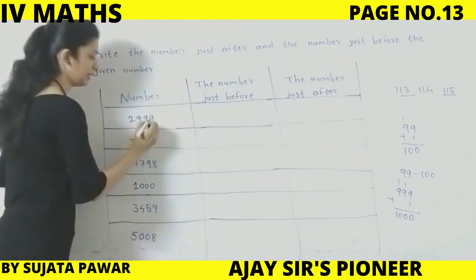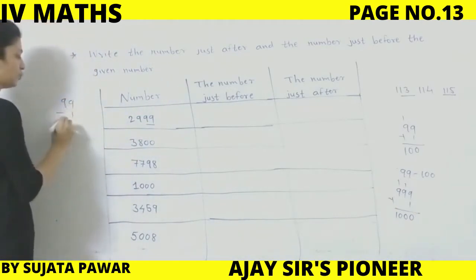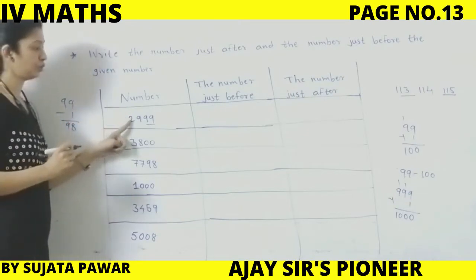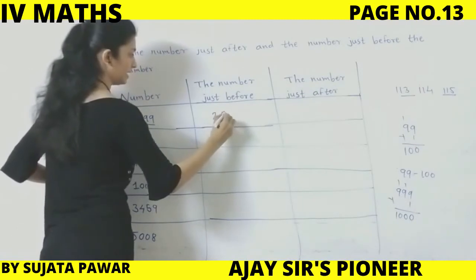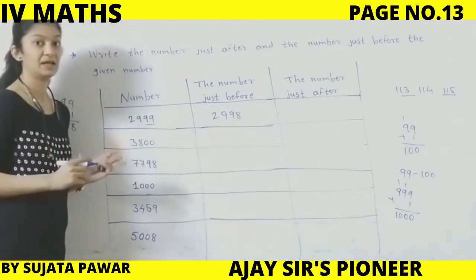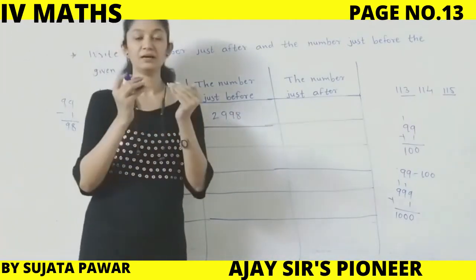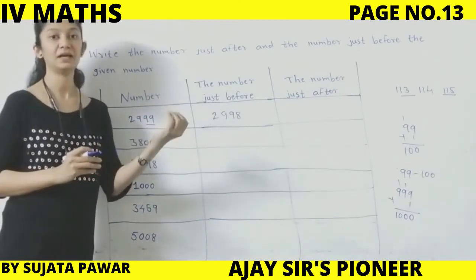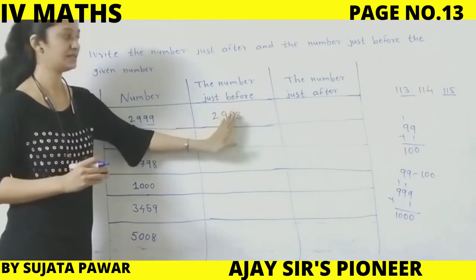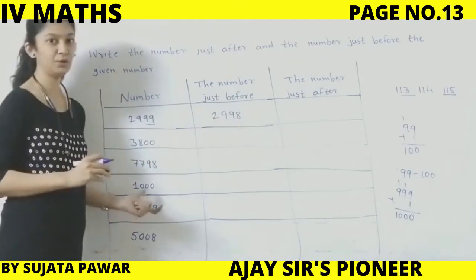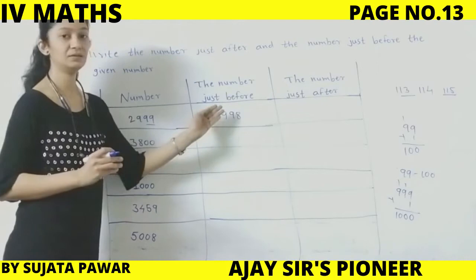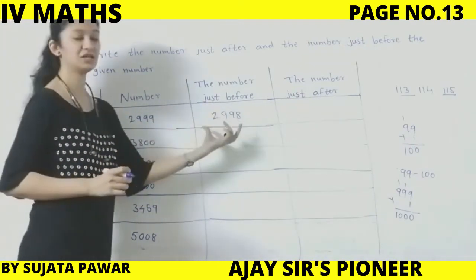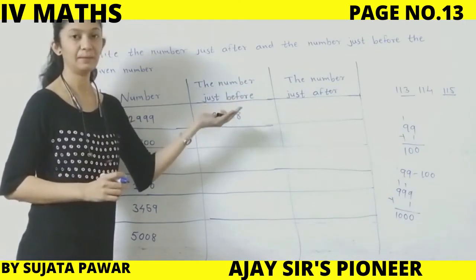Yahan par humara before ka column hai. Ab before mein, agar aap dekhoge: 99 before means 99 minus 1, one number hum minus karenge — that means peeche aayenge. 9 minus 1 is 8, so 98. Therefore, 2999 before is 2998. Now, just after ka column: humein is number ke baad nahin dekhna hai. Jo hamara main question hai, bilkul usi number ka before and after batana hai. Bahut se bachche is mein confused ho jaate hain aur answer se related agle column mein likh dete hain — to yeh wrong hoga.